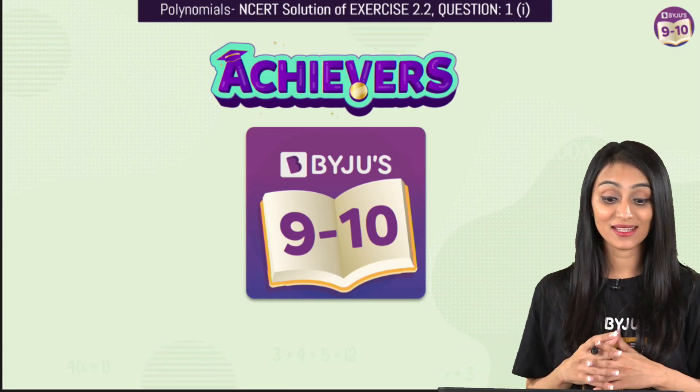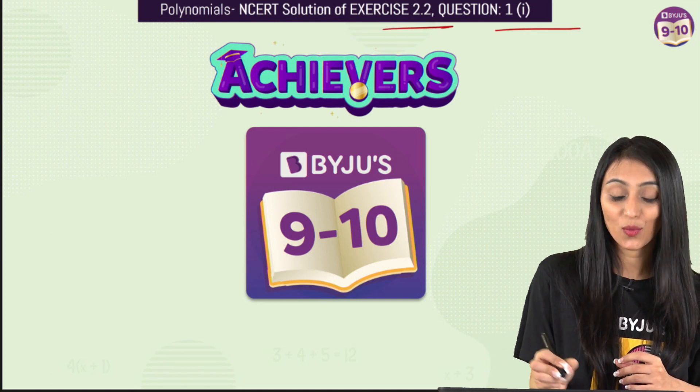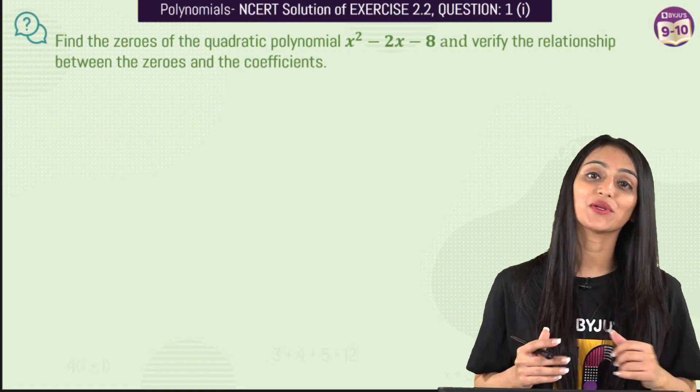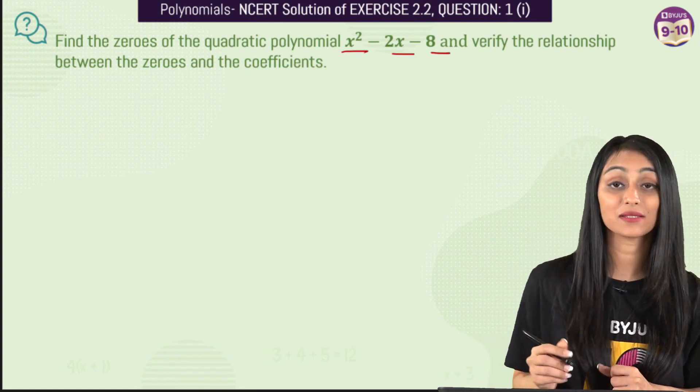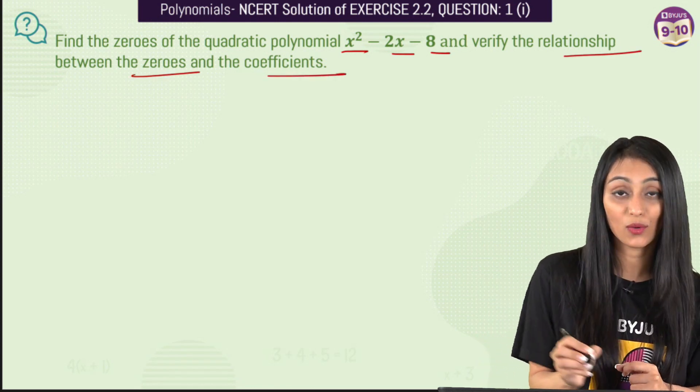Hey there, today I'm here to discuss another question from NCERT which is from your exercise 2.2 question number 1 part 1. So let's take a look at the question. So here we have to find the zeros of the quadratic polynomial x squared minus 2x minus 8 and then we have to verify the relationship between the zeros and the coefficients.